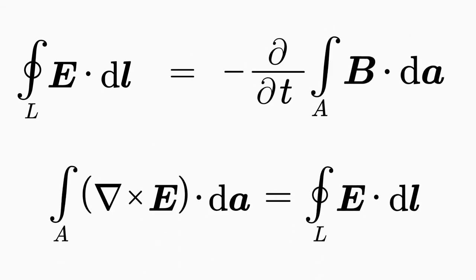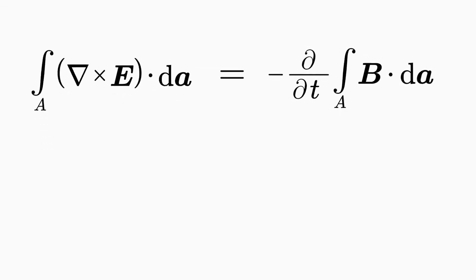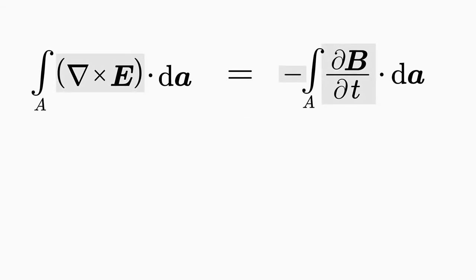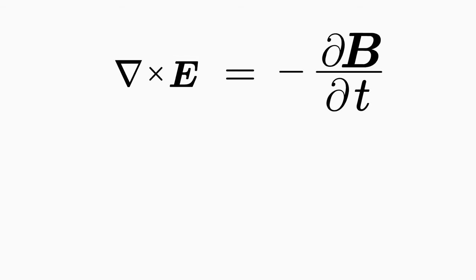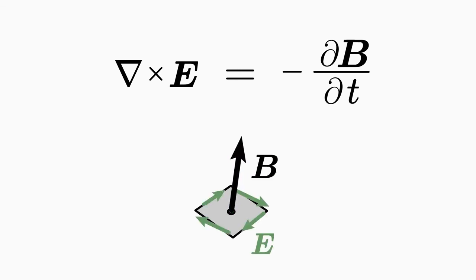With the curl integral theorem, you can transfer the integral form into the differential form. Simply replace the line integral with a surface integral, which brings the curl of E into play. On the other side, you may pull the time derivative inside the integral. Since the equation applies to any surface A, the integrands on both sides must be equal, giving you the differential form of the third Maxwell equation: curl of E equals the negative time derivative of the magnetic field B. The third Maxwell equation in differential form states that a changing magnetic field B causes a rotating electric field E and vice versa, in such a way that energy conservation is fulfilled.